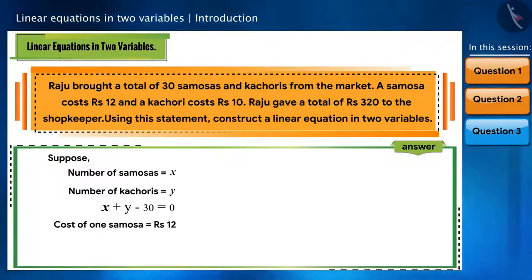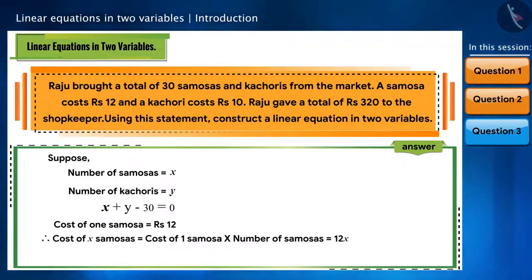So, according to the question, the cost of a samosa is rupees 12. What do we do if we want to find the cost of x samosas? We will multiply the cost of one samosa by the number of samosas. So, this will become 12x.